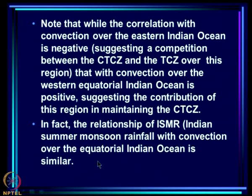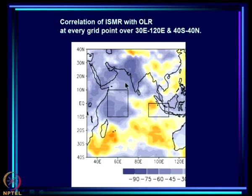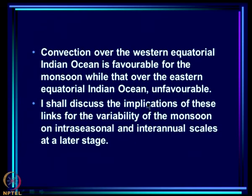This relationship of ISMR (Indian Summer Monsoon Rainfall) with OLR over the equatorial Indian Ocean is very similar. ISMR is correlated with OLR at every grid point; the correlation is negative with the monsoon zone (tall clouds have lower OLR and higher rain), while it is of the opposite sign over the central and eastern equatorial Indian Ocean. So convection over the western equatorial Indian Ocean is favorable for the monsoon while that over the eastern equatorial Indian Ocean is unfavorable.